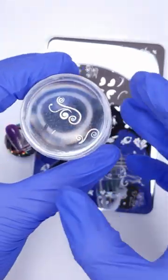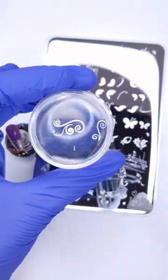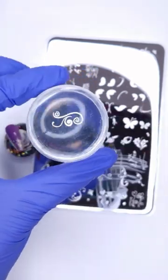Then taking my clear jelly stamper, as you can see, I gently, with a quick flick of the wrist, roll this across my stamping plate. It then picks up the image beautifully.